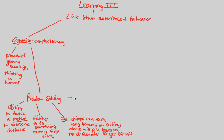Problem-solving varies not only among species but also among individuals. Some individuals are able to problem-solve certain things better than others of the same species. Our problem-solving abilities are greater than those of the chimp, but between ourselves individually, we definitely have variations in our problem-solving capabilities.